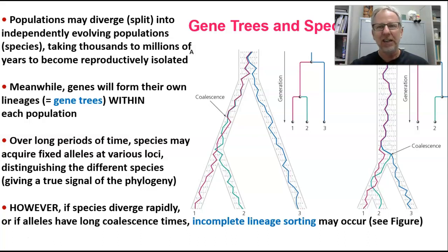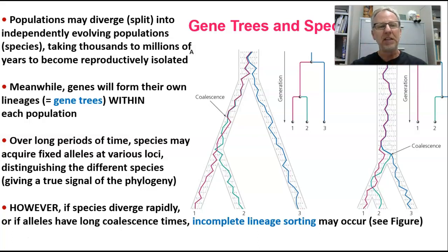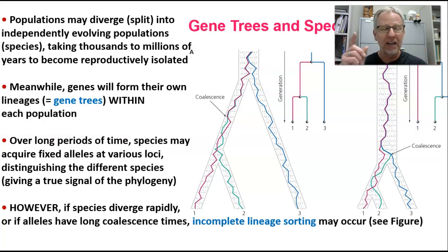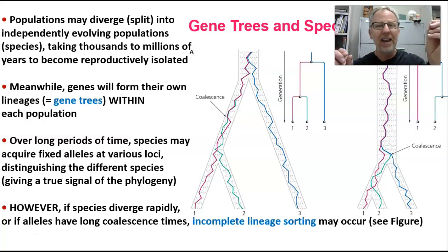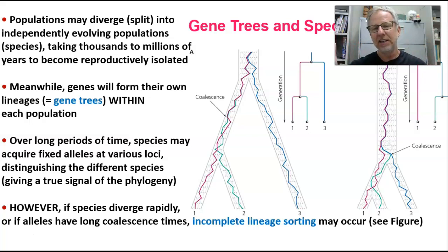Each gene has its own gene tree, its own history within a population. Over long periods of time, species may acquire fixed alleles at various loci such that a locus only has one allele at 100% frequency. That can happen due to genetic drift or selection. These fixed alleles can help us distinguish species — species one has allele A for this gene, species two has allele B, and species three has allele C. If we can find fixed differences, species become distinguishable based on that.